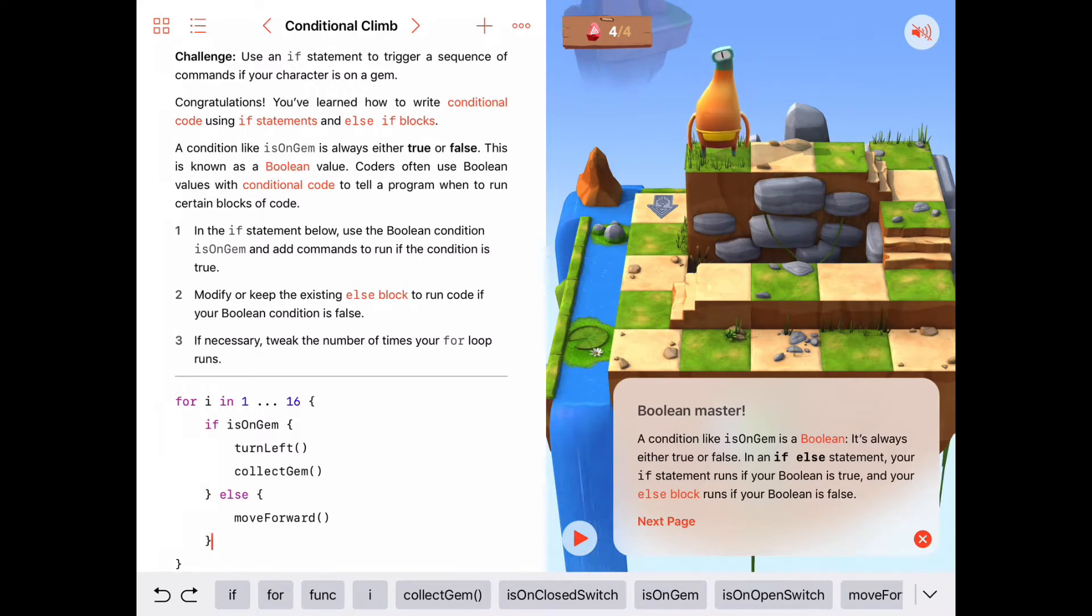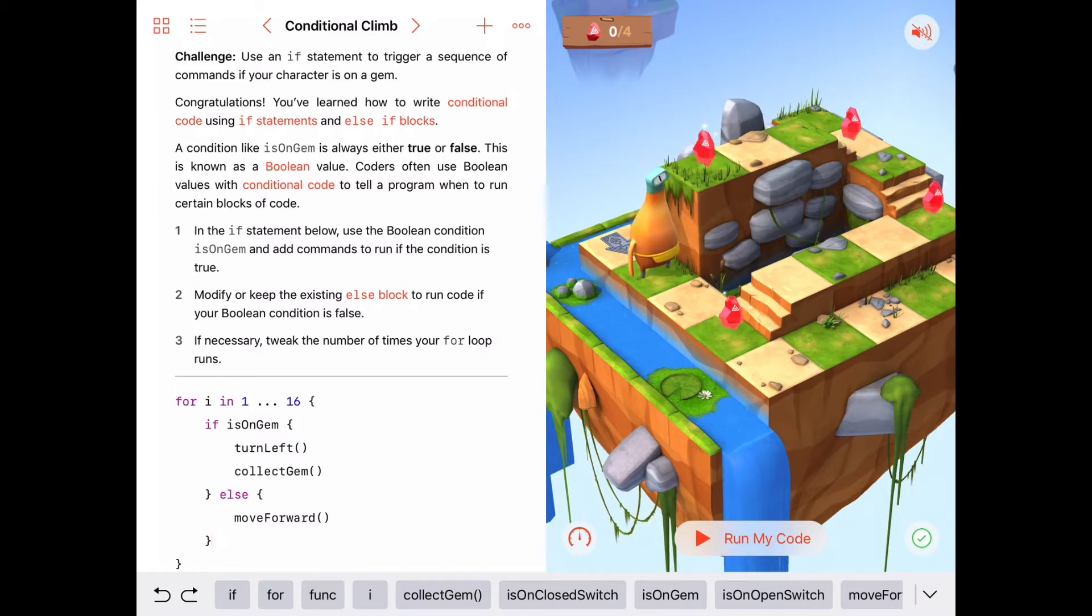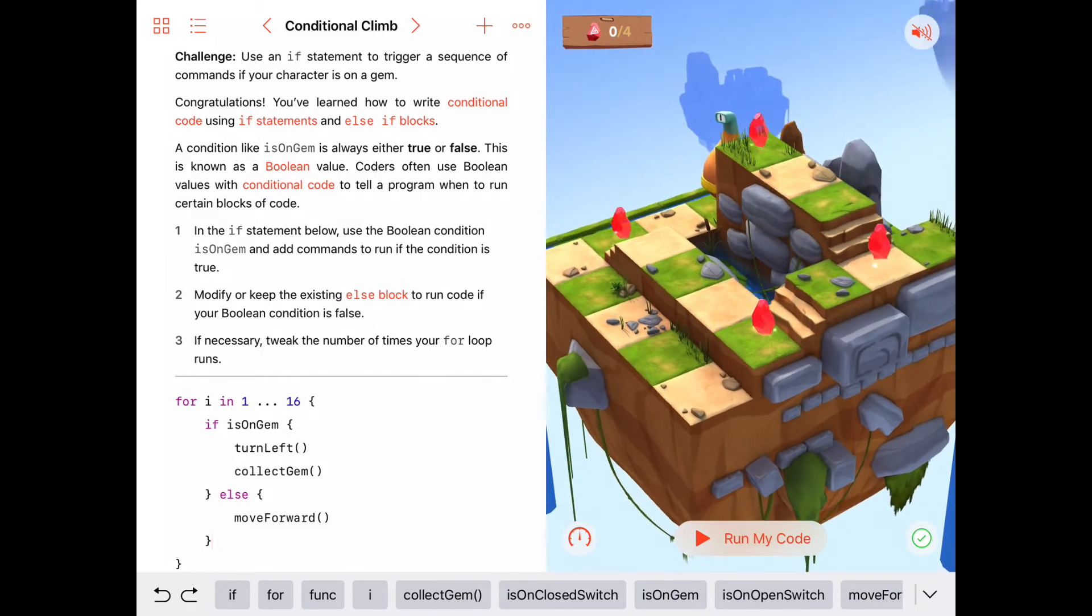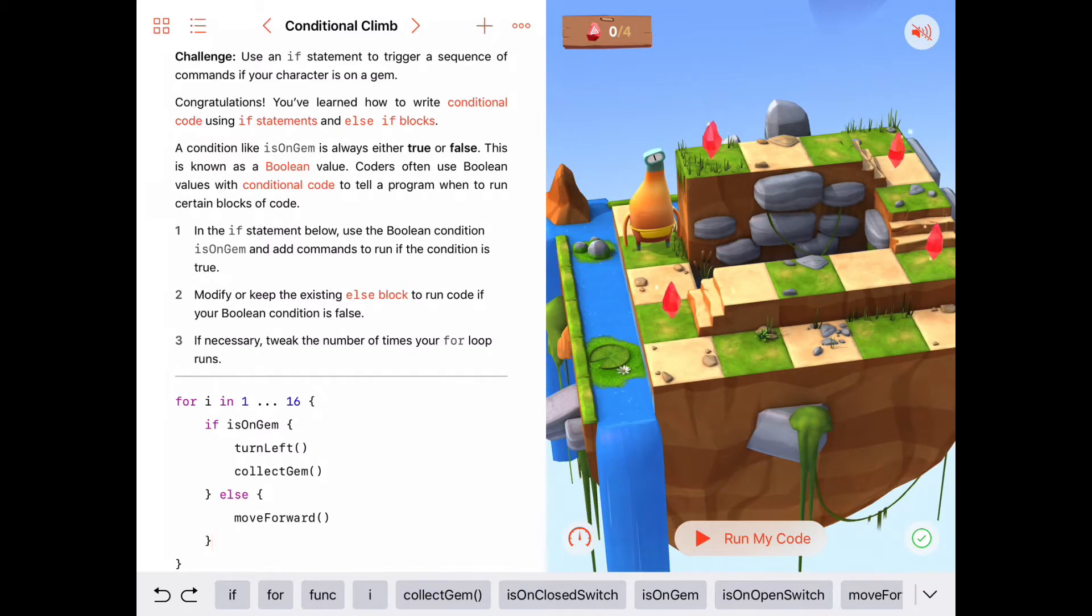And maybe it might make sense to us then to change our thinking in this and say, instead of doing something like this a set number of times, we could look at how many gems we have. And we'll say, as long as we don't have all of the gems we need, we're going to keep doing this: if we're on a gem, turn left and collect gem, otherwise move forward, as long as we don't have our total number of gems.